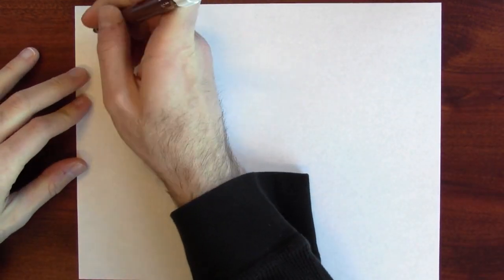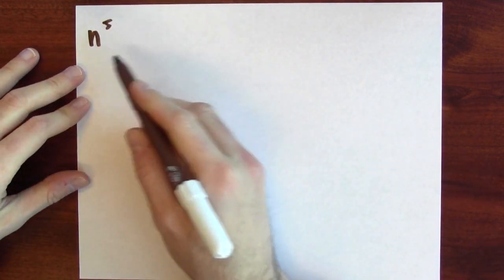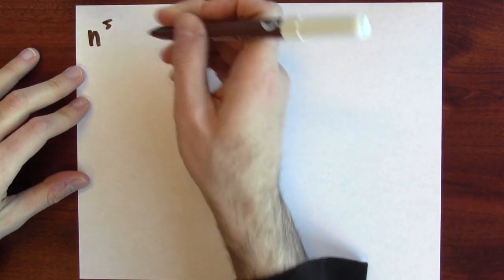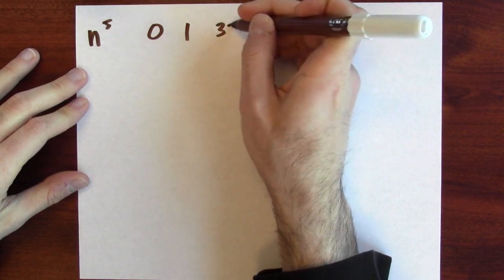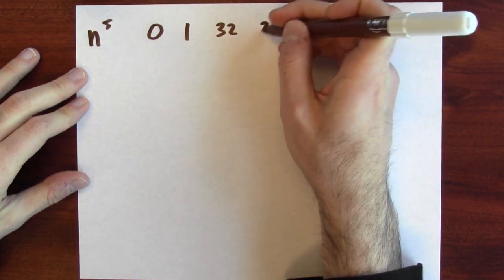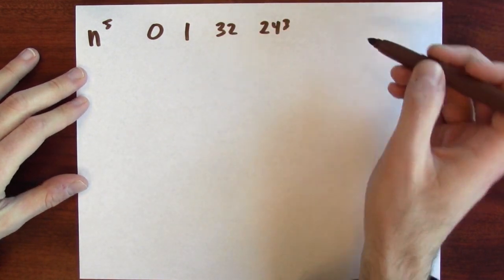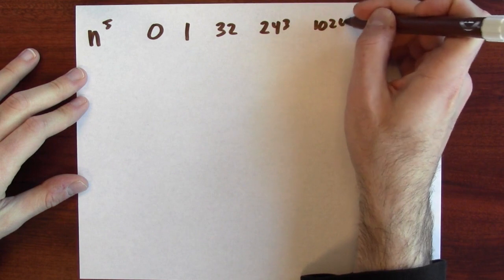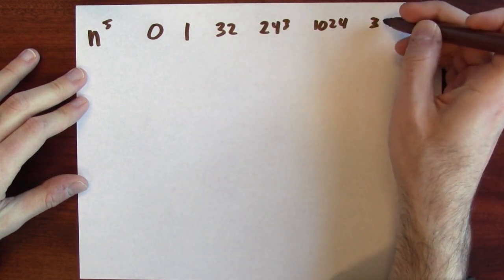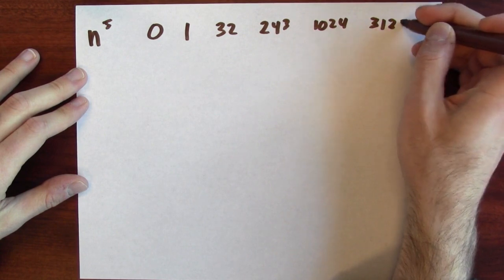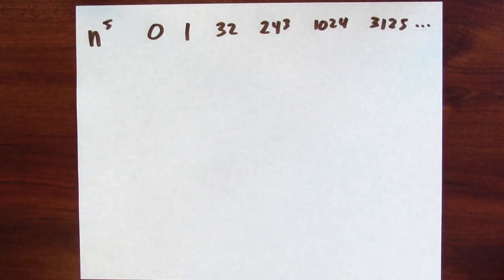As a first example, let's take a look at n to the fifth and the fifth powers. 0 to the fifth is 0, 1 to the fifth is 1, 2 to the fifth is 32, 3 to the fifth is 243, 4 to the fifth is the same as 2 to the tenth — that's 1,024. 5 to the fifth is 3,125, and so on. That's just a list of fifth powers.